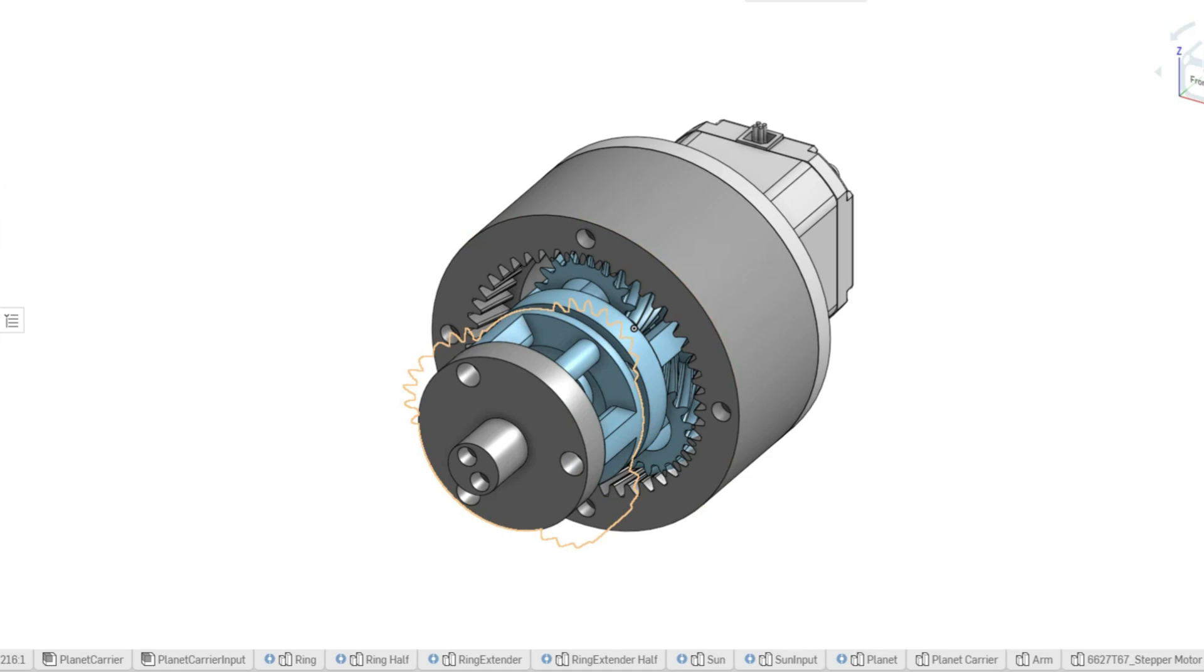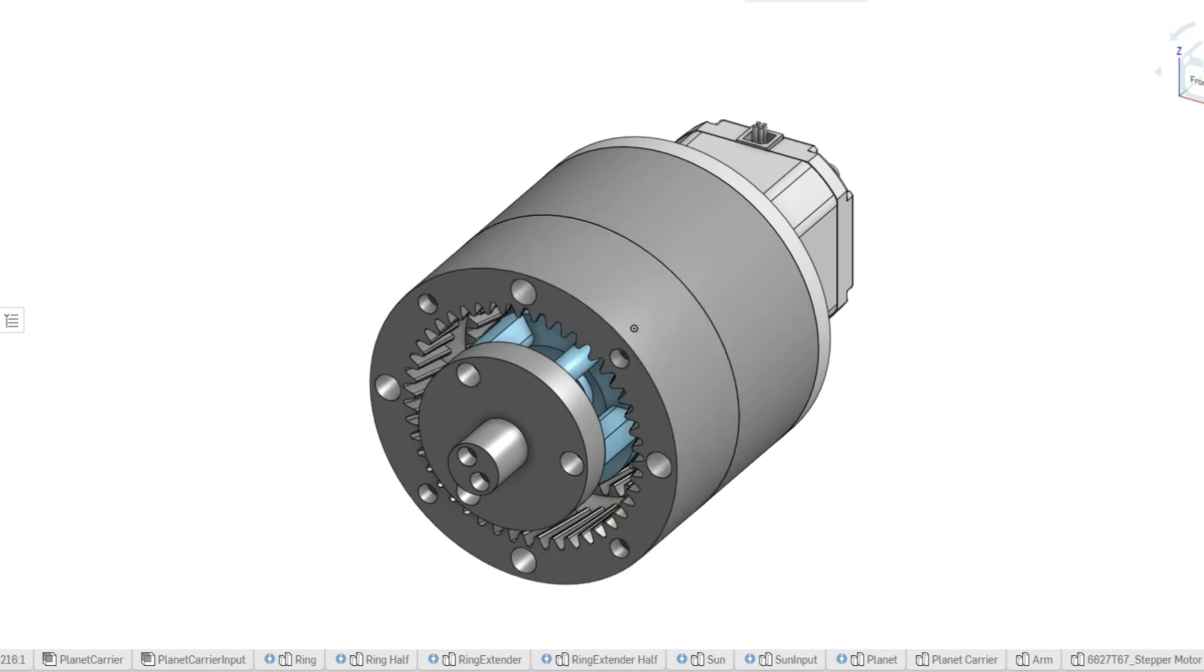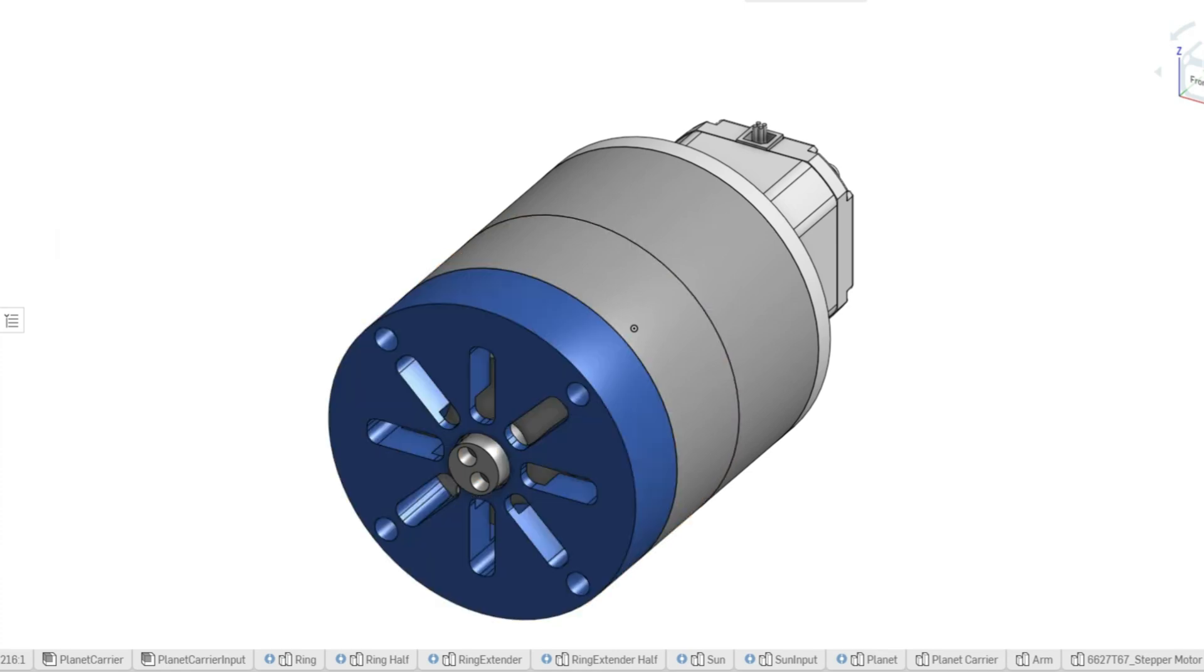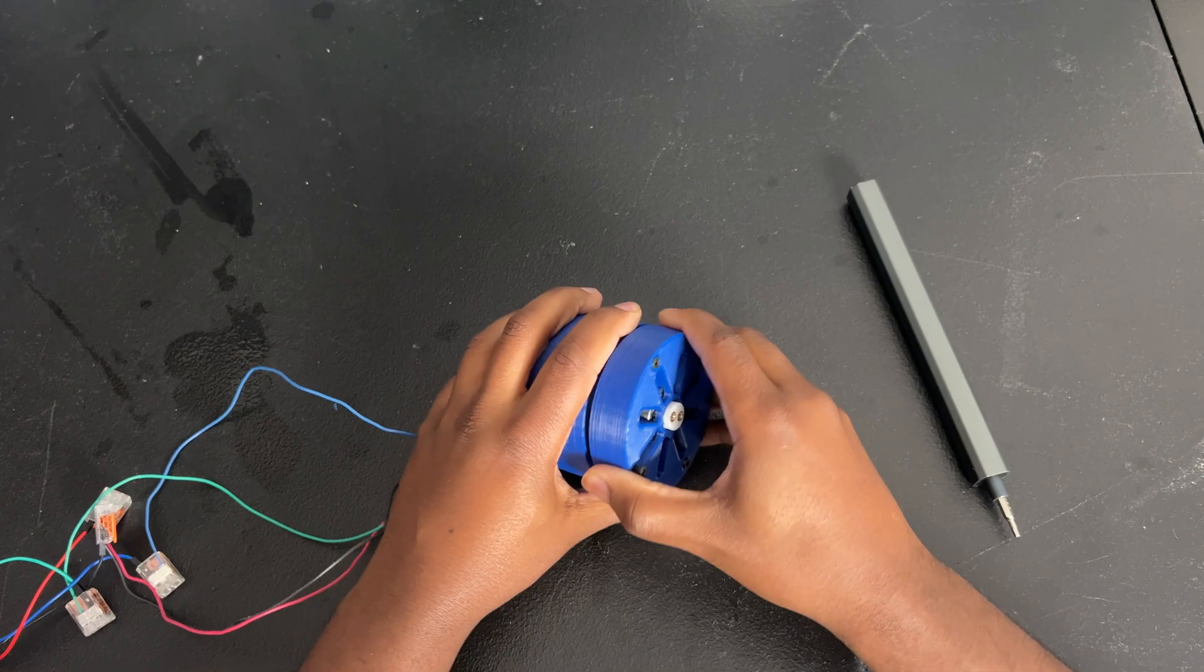So that second sun gear on the planet carrier is going to be the input to our old planet carrier. Now if we stack another ring gear on top of that, aka a ring extender, we basically have two planet carriers connected to each other. We have one 6 to 1 gear ratio going into another 6 to 1 gear ratio, with 6 times 6 gives us 36. And to make that change it's pretty easy so let's do it.